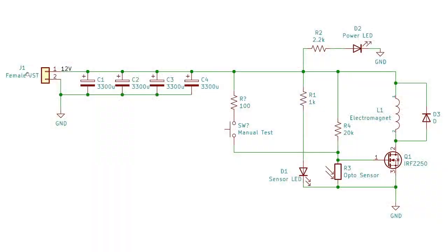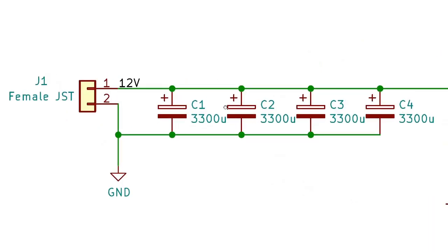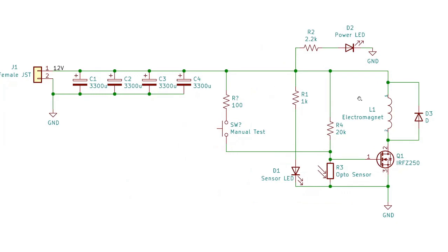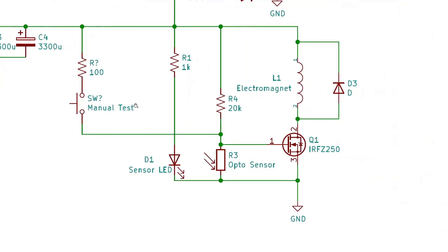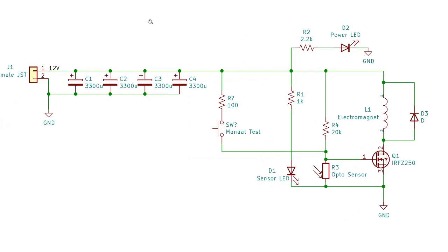This is the first version of the schematic. The power comes in from the female JST connector and then there's several large capacitors in parallel because my thought was I'd like to shoot a really high current pulse through a low resistance coil whenever the sphere comes around. I've also got this manual test button and then this is the trigger circuitry for the opto sensor to turn on the MOSFET but I quickly discovered that in this particular setup I was blowing up MOSFETs pretty quickly.